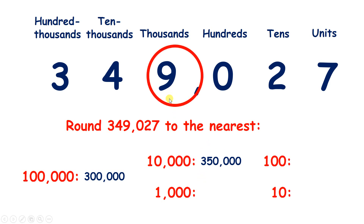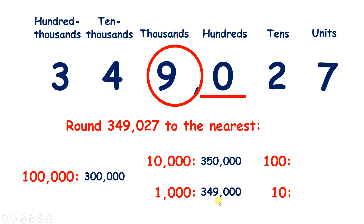Now rounding to the nearest 1,000, we look next door — we have a 0, so we're rounding down, that 9 stays the same. If we look to the right and change all of those numbers to 0, that leaves us with 349,000.